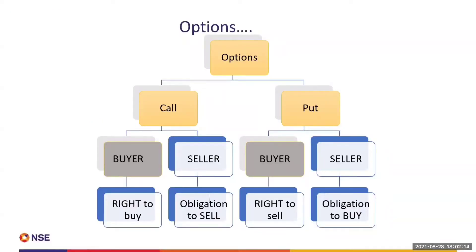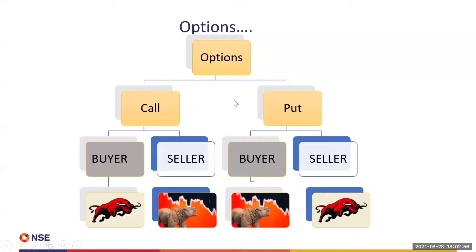The buyer of a put option has the right to sell. When will you take the right to sell? When you are bearish on the market. You will buy a put option when you are bearish, and when you are bullish you will be a put seller. A call option buyer as well as a put option seller have bullish views on the market, whereas a call option seller as well as a put option buyer have bearish views.